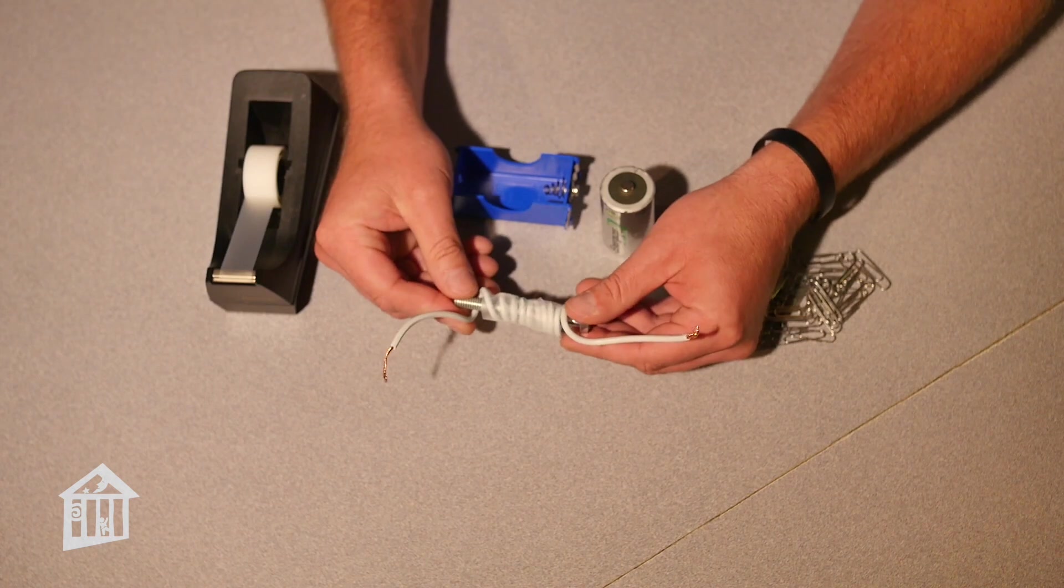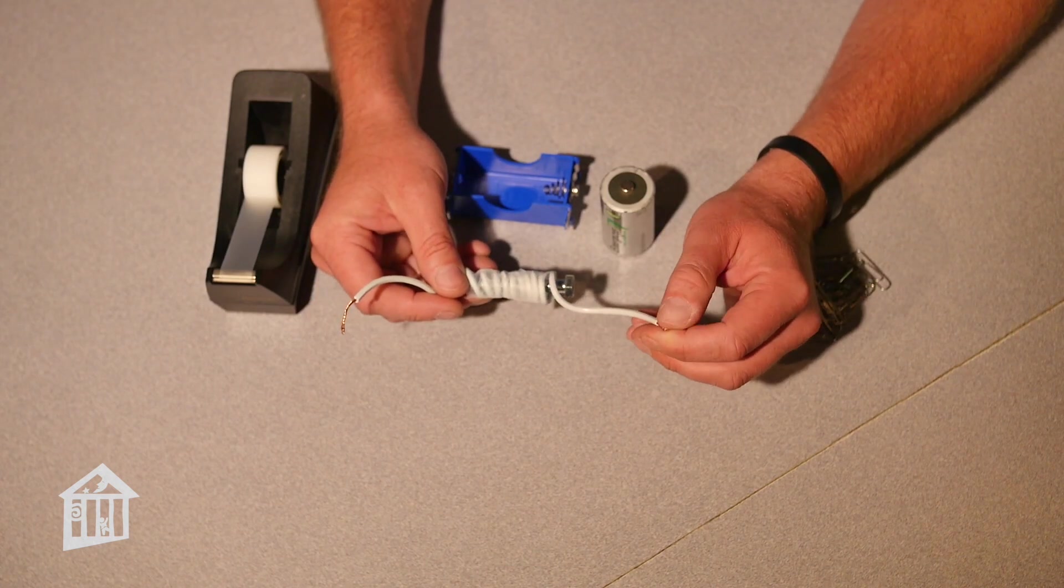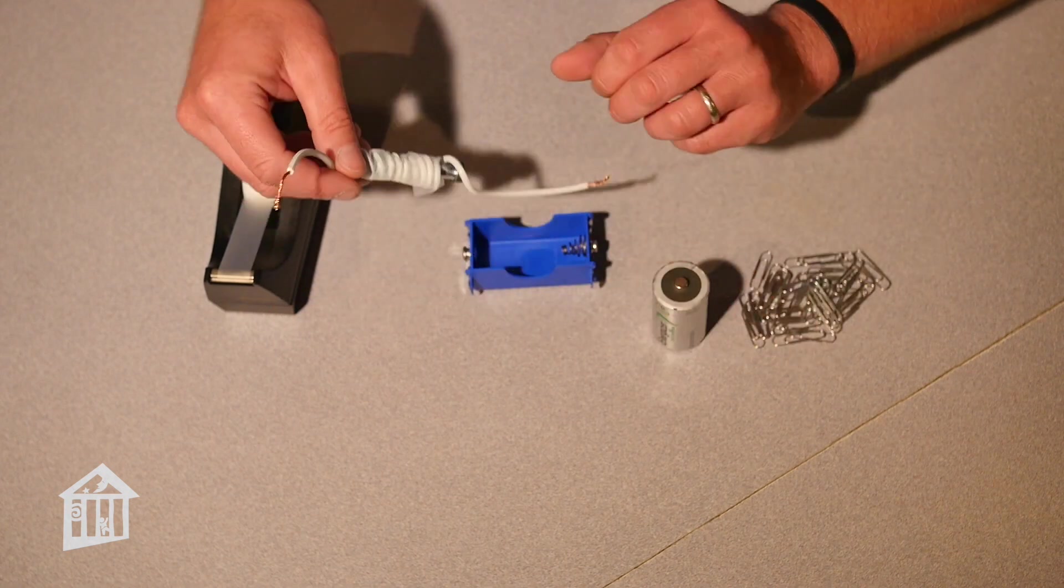Once you've created your copper wire coil, the next step is to take the ends of the conductors and attach them to your D cell battery holder.